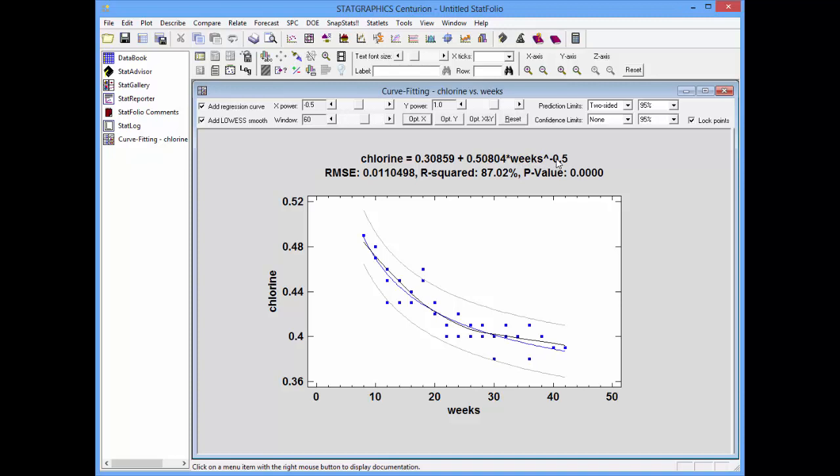That's actually a nice model. You'll notice, for example, as weeks gets very large, chlorine will reach an asymptotic value of 0.30859.